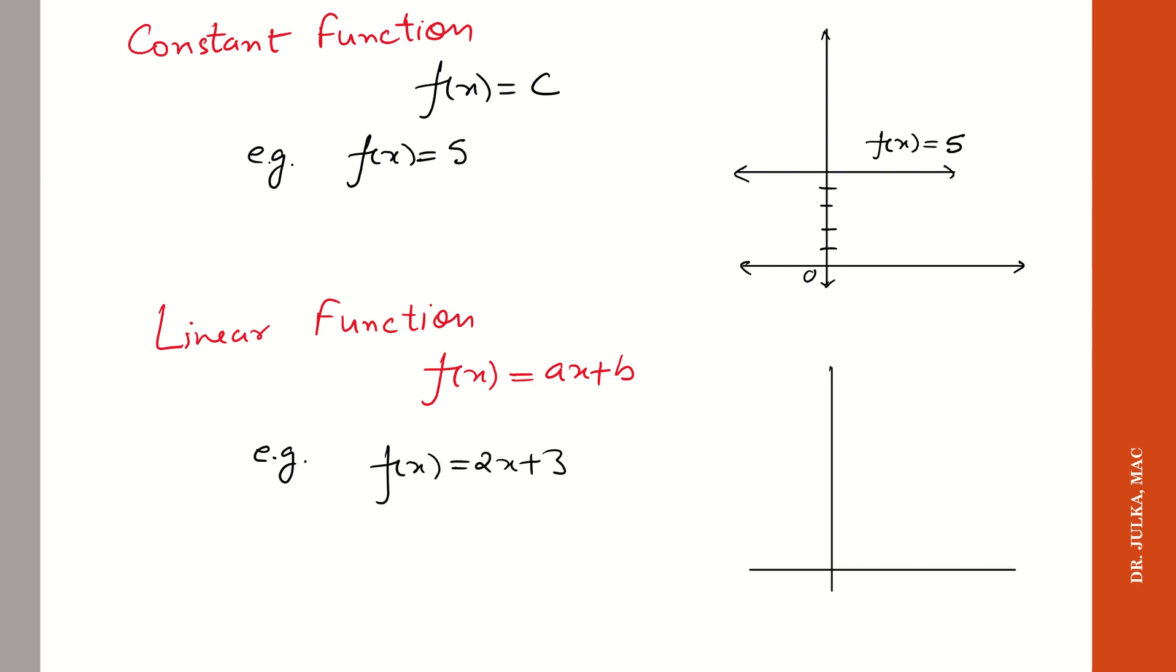If we plot this function on the graph, if x is 0, y is 3. If x is 2, y is 7. Join these two points and get function f(x) = 2x + 3. This is the linear function.